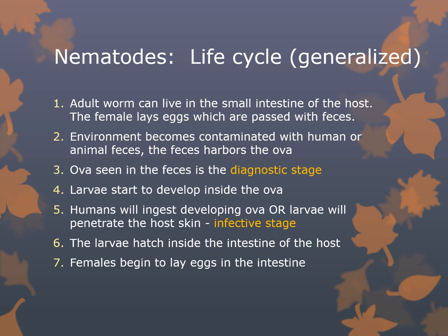Ova can be seen in the feces — that's the diagnostic stage. Larvae start to develop inside the ova. A first-stage larva is called the rhabditiform larva, which is the feeding non-infective larval stage. The third-stage larva is known as the filariform, the non-feeding infective stage that penetrates the skin. Humans will ingest developing ova or larvae, or the larvae will penetrate the host's skin at the infective stage. The larvae hatch inside the intestine and the female begins to lay eggs.